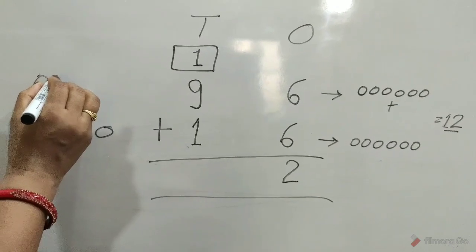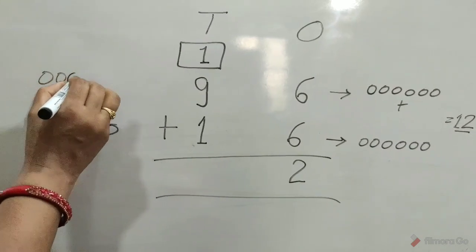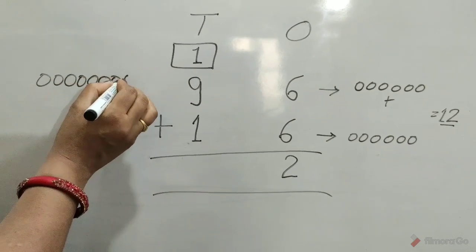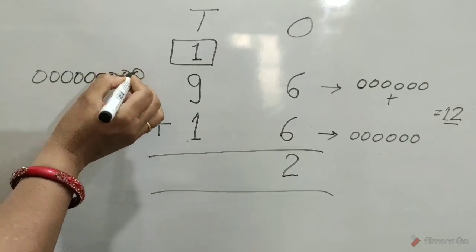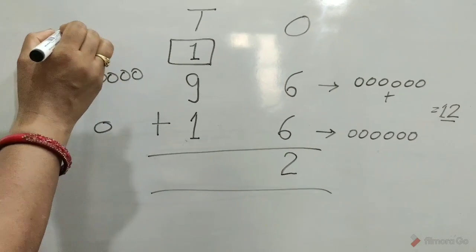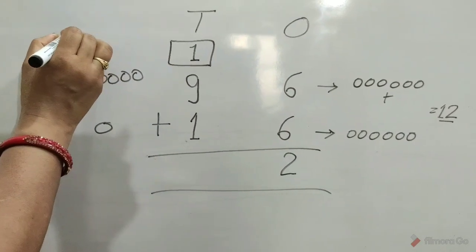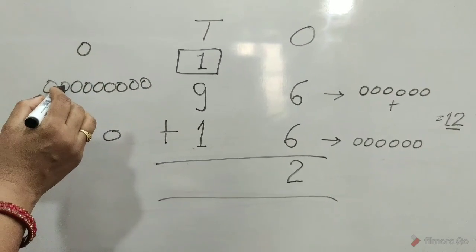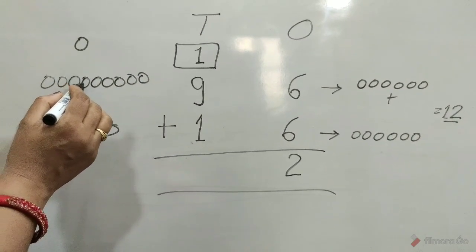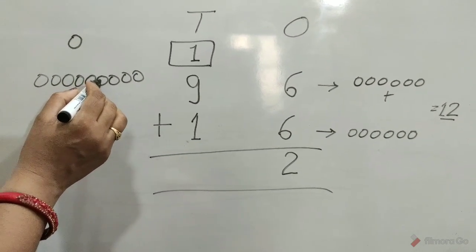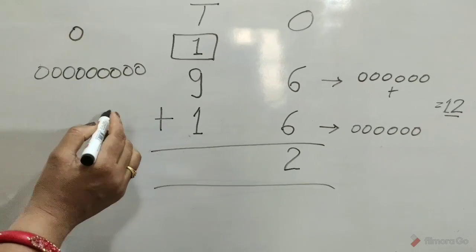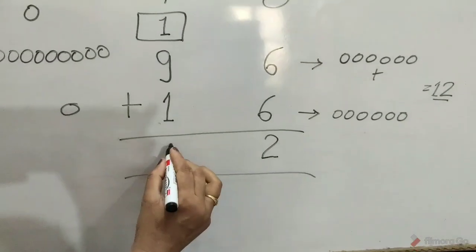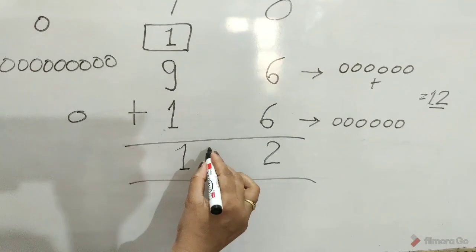Draw 9 circles in front of 9 tens: 1, 2, 3, 4, 5, 6, 7, 8, 9. And 1 circle in front of 1 ten. Count all together: 1, 2, 3, 4, 5, 6, 7, 8, 9, 10, 11. Total number of 11 tens right here.